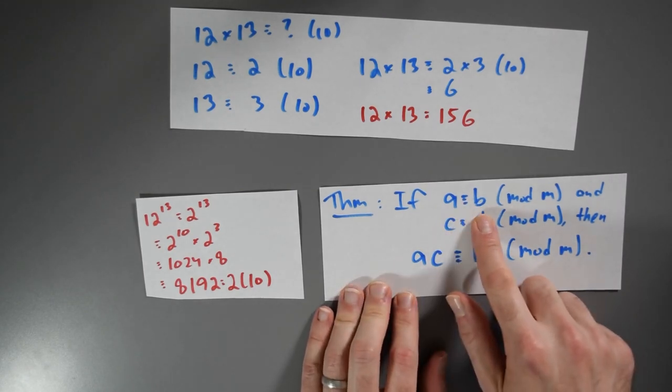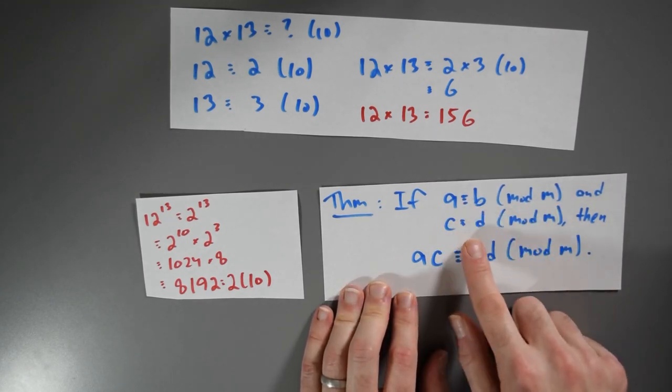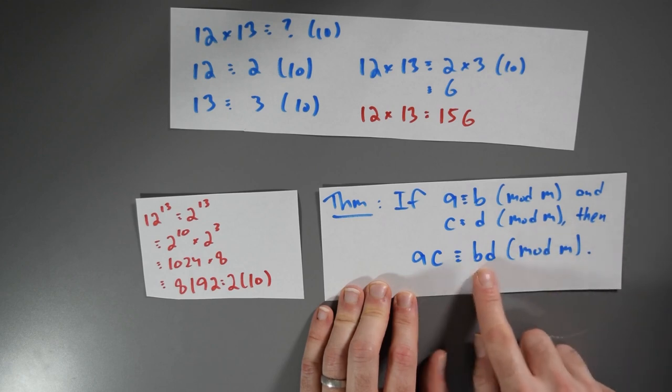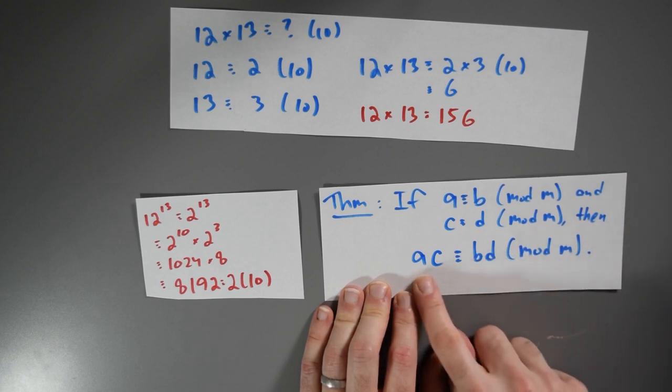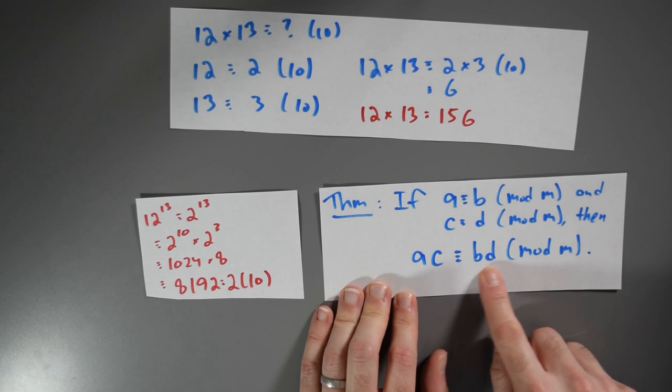Right here, a is the same as b modulo m, and c is the same as d modulo m. And here I've got two multiplication computations. Here I'm multiplying a times c. Here I'm multiplying b times d.